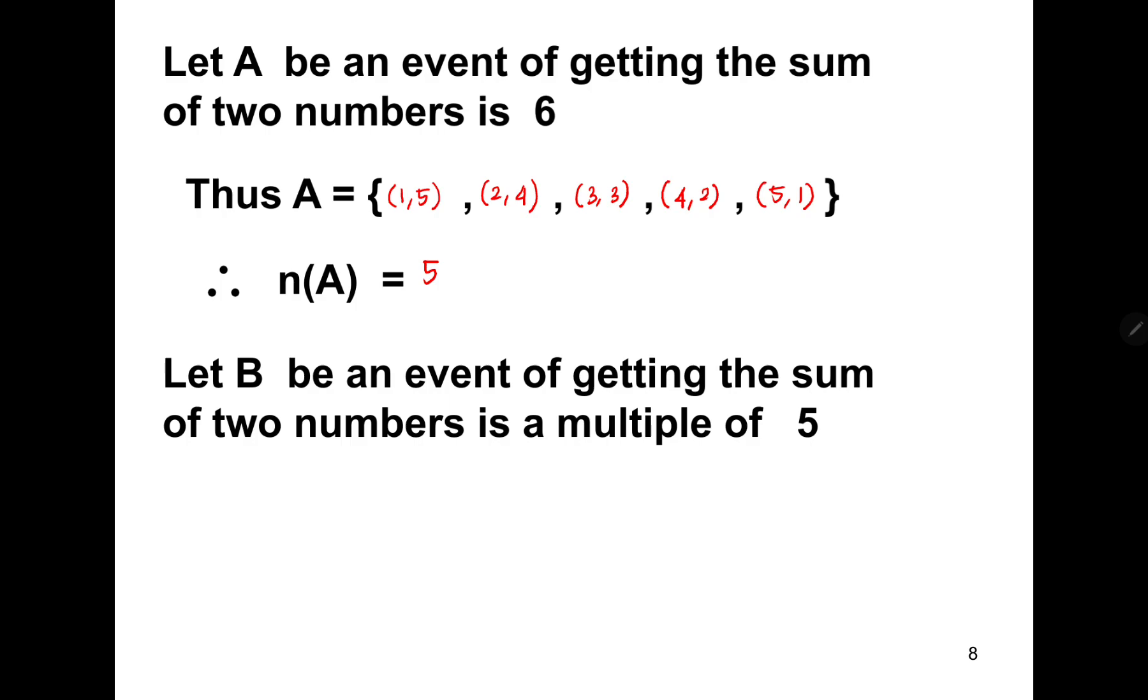Now, let B be an event of getting the sum of two numbers is a multiple of 5. So we have 5, 10, maybe 15, 20, and 25. Thus, the element of B are (1,4), (4,1), (2,3), (3,2), (5,5), (4,6), and (6,4). Because 1 plus 4 is 5, so it is a multiple of 5. We have 5 plus 5 is equal to 10. 10 is also a multiple of 5. And 6, 4 means 6 plus 4 is 10, also a multiple of 5. So, we have the number of event B is equal to 7.